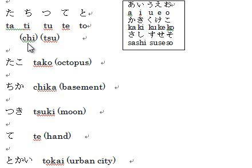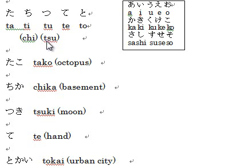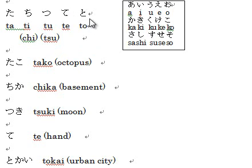It's not T I — this is チ. But you can type both T I or C H I. Then つ — you can type either T U or T S U. But pronunciation is closer when you say T S U. Because it's not T U, this is T S U. はい。て is T E and と is T O.